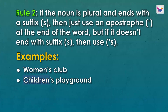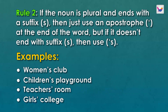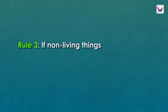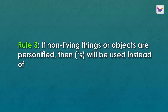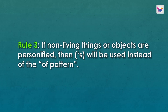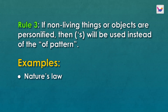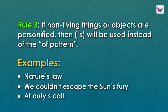Women and children are plural but don't take the suffix S, so we use apostrophe S with them. There is also a rule involving personification: when a non-living noun is treated as a living being through personification, we use apostrophe S to show possession. Examples: nature's law — here nature is personified. We couldn't escape the sun's fury. A duty's call. In each of these examples, personification allows us to use apostrophe S.